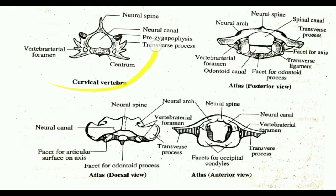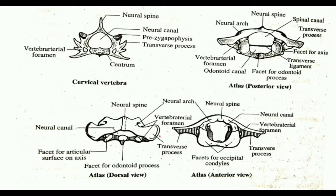The centrum is reduced and the cervical vertebrae have short transverse processes and neural spine. At the base of the transverse process, there is a vertebral arterial foramen.